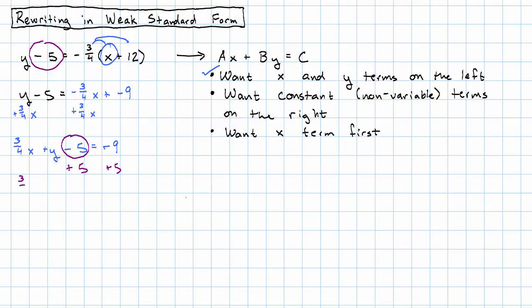Now I have three-fourths x plus y equals negative 9 plus 5 is negative 4. Now I have the constant term on the right.